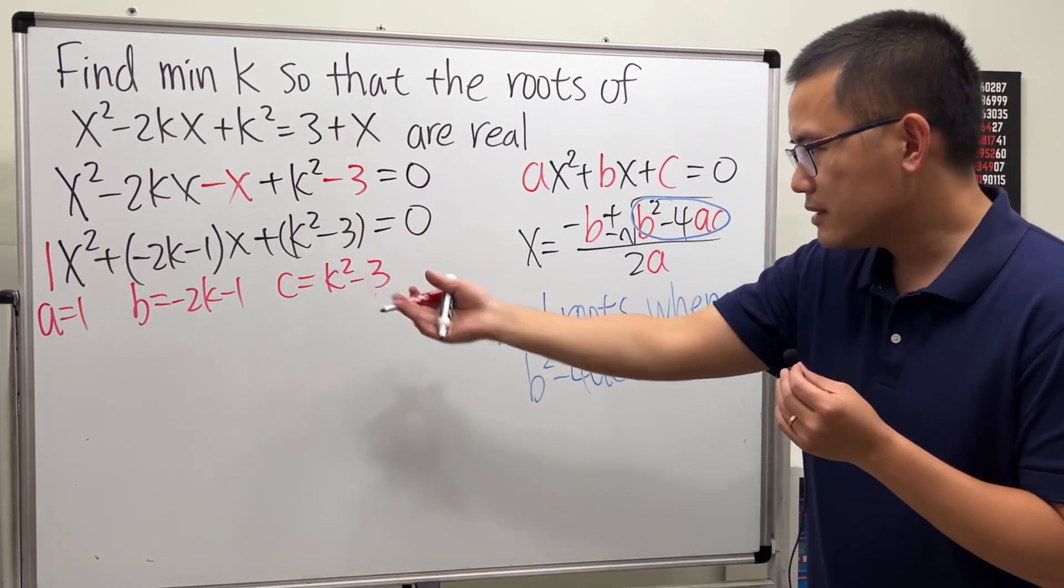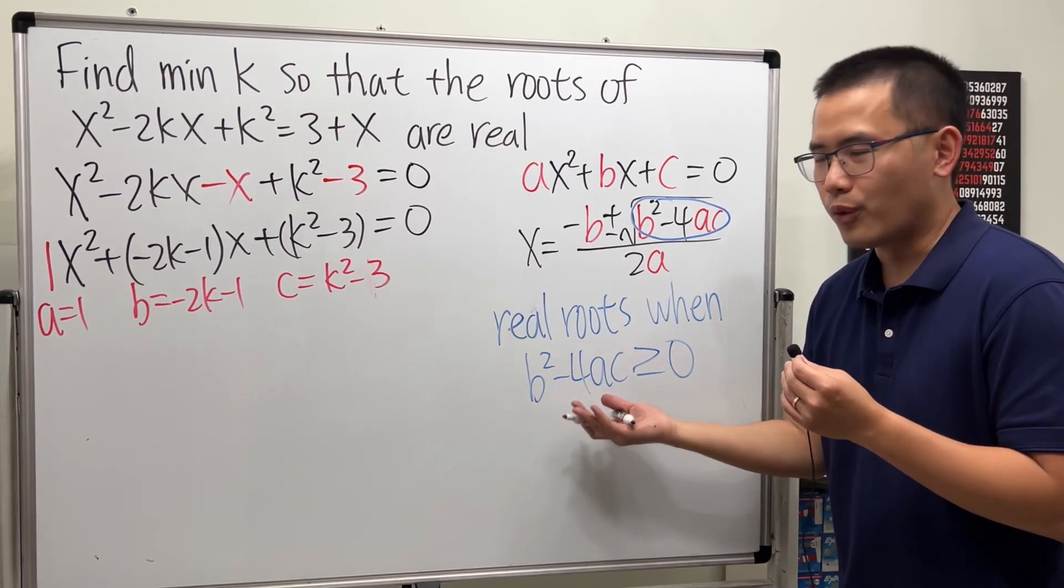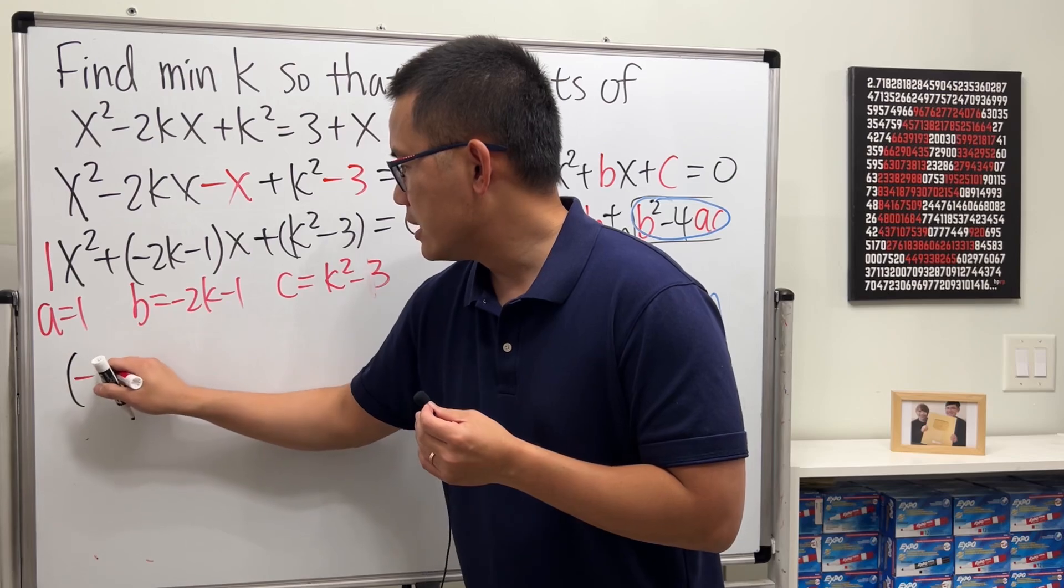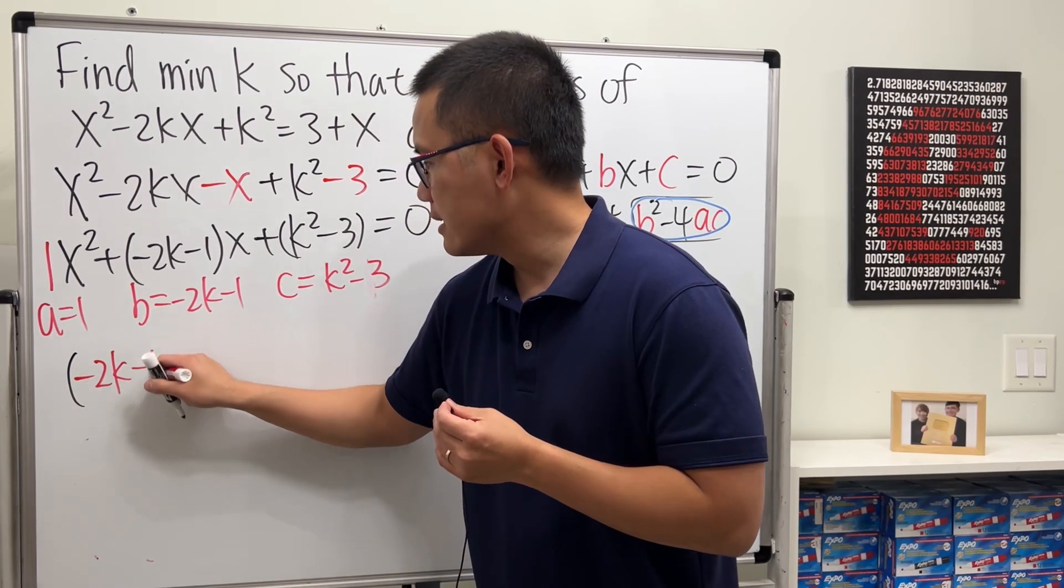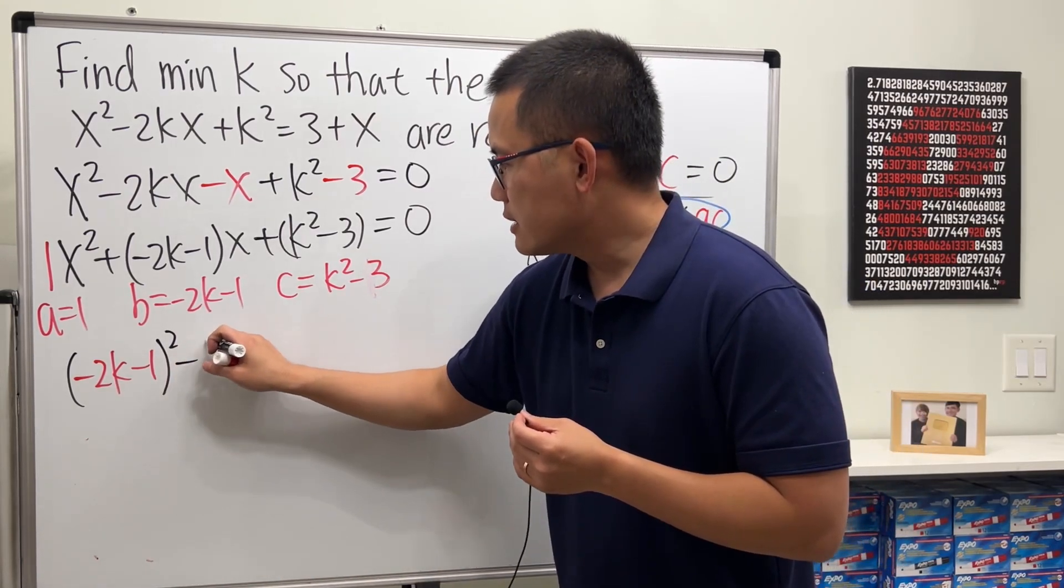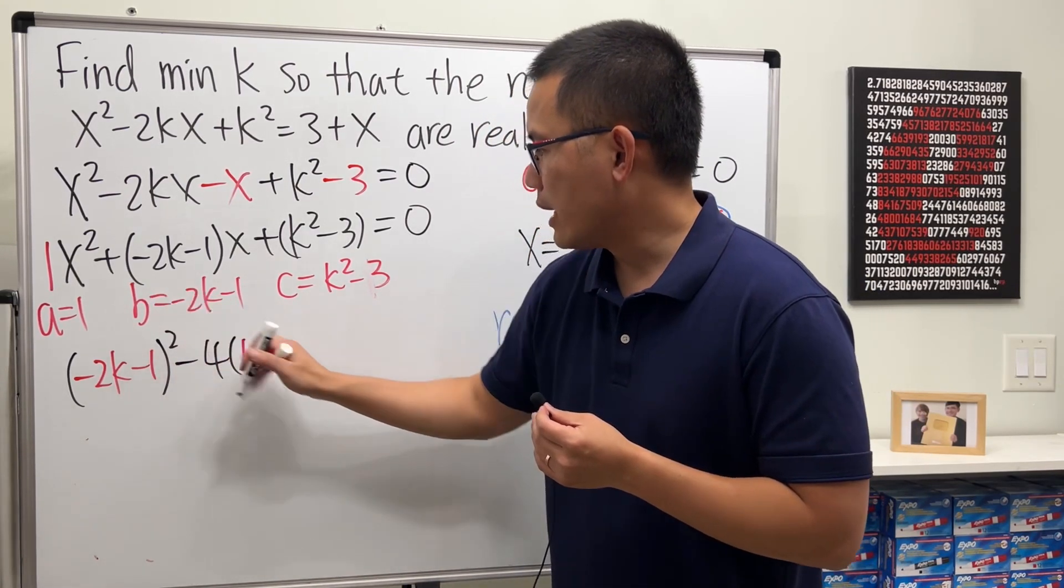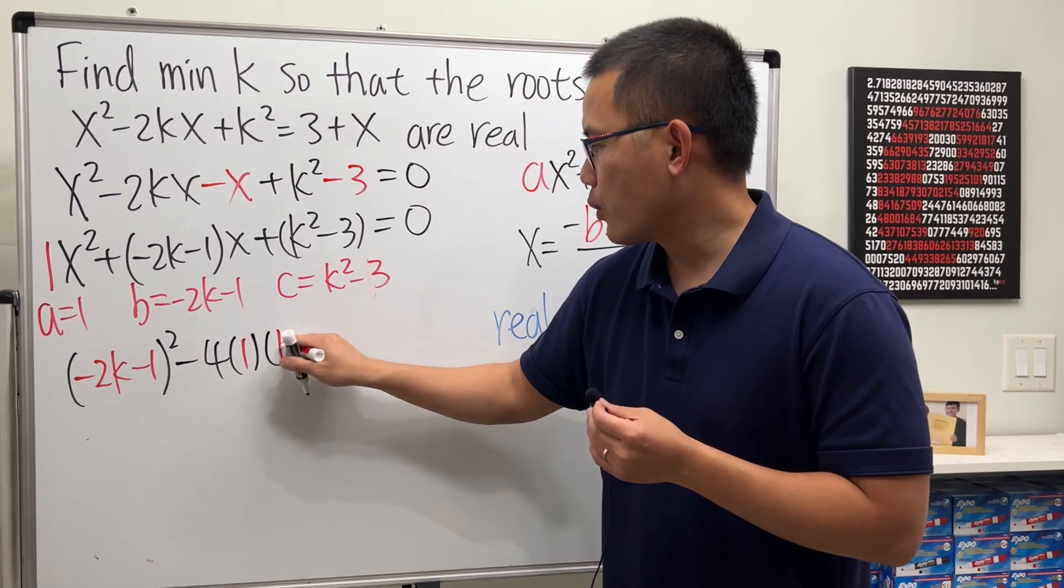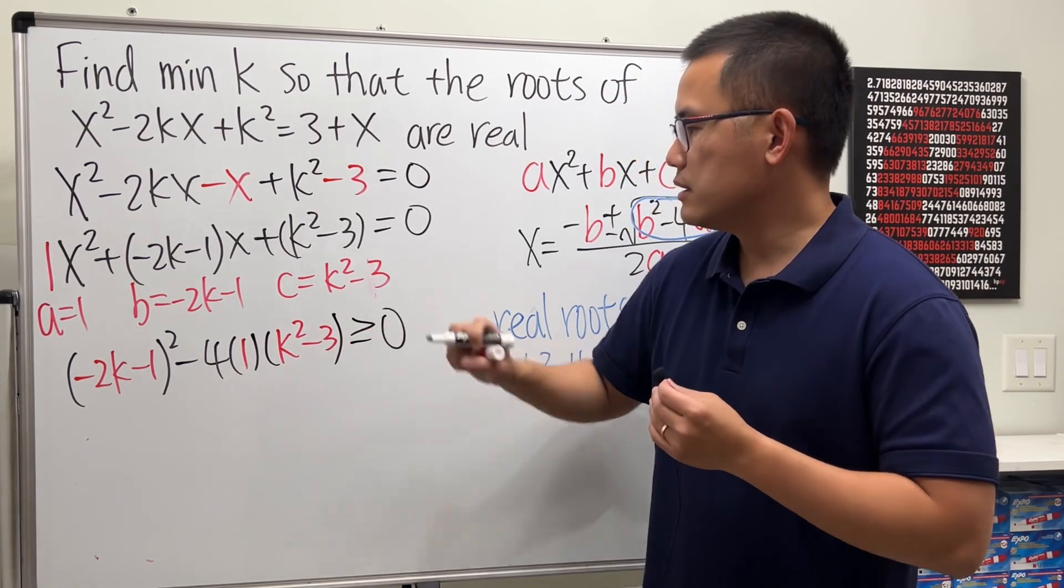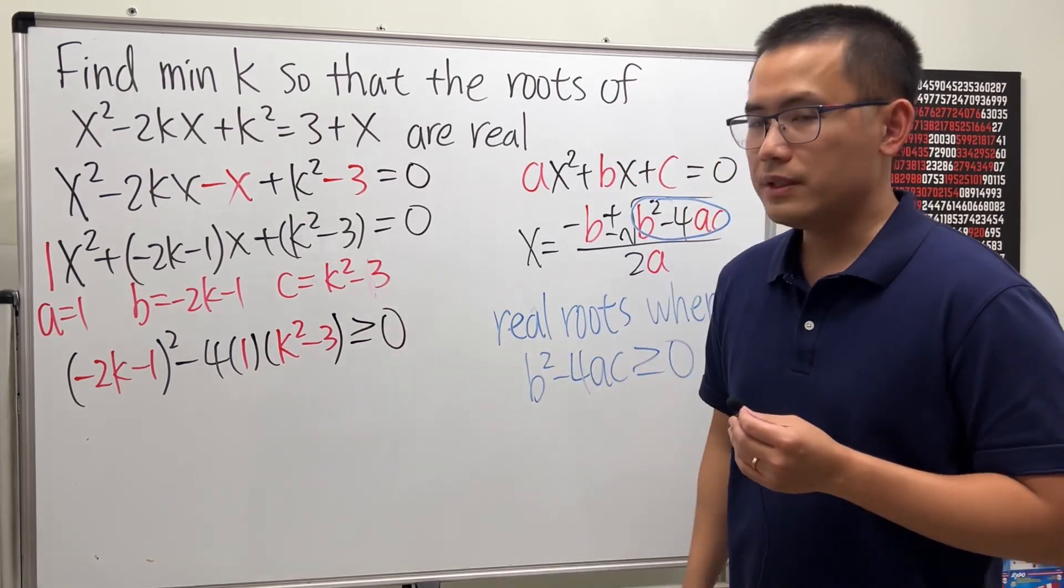Now we have the a, b, c. We can just plug into this formula here. So we just have to make sure that (−2k − 1)² minus 4 times a, which is 1, times c, which is k² − 3, we have to make sure that this is greater than or equal to zero. Now we just have to solve it.